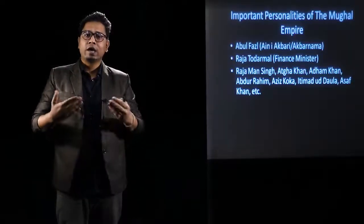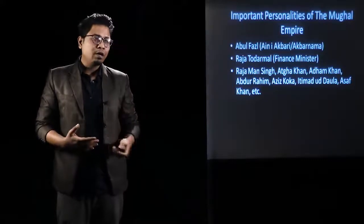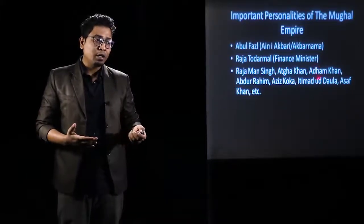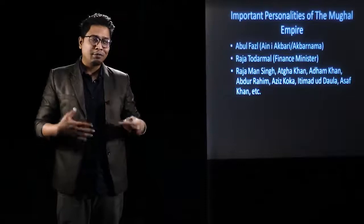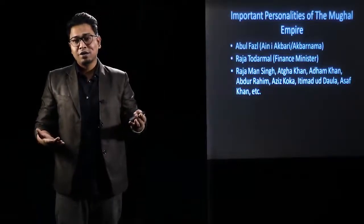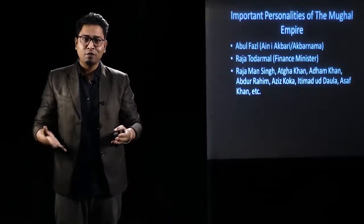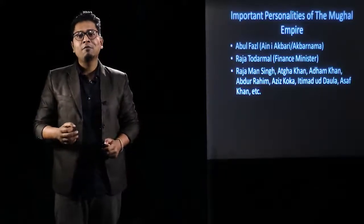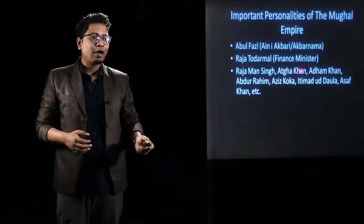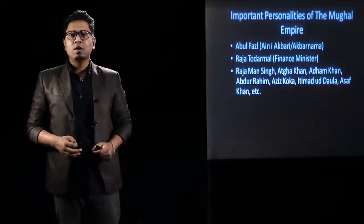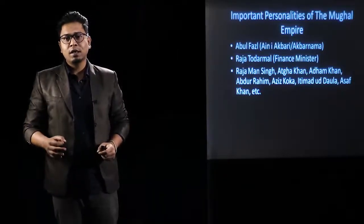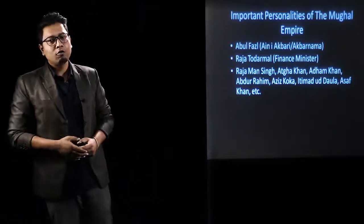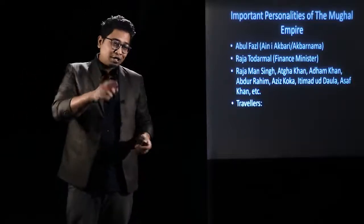Raja Man Singh was the most famous general of Akbar. Adha Khan was Akbar's wazir who helped in the initial stages of the empire. Adham Khan, son of Maham Anga, was killed by Akbar after he assassinated Adha Khan — Adham Khan was thrown off the top of the Diwan-i-Khas. Abdul Rahim Khan-i-Khana was the son of Bairam Khan. Aziz Koka was the son of Adha Khan and governor of Gujarat. Itimad-ud-Daula was the father of Nur Jahan, an important personality during Jahangir's reign. Asaf Khan was the brother of Nur Jahan, also important during Jahangir's rule.